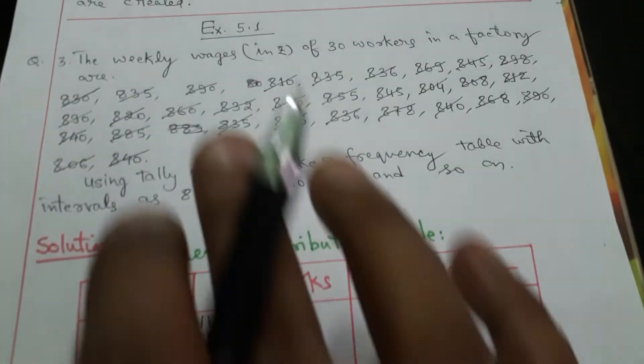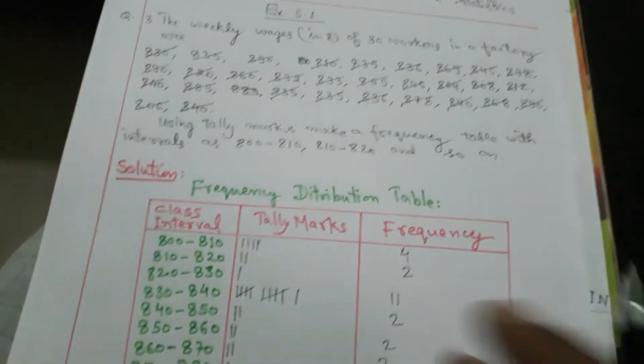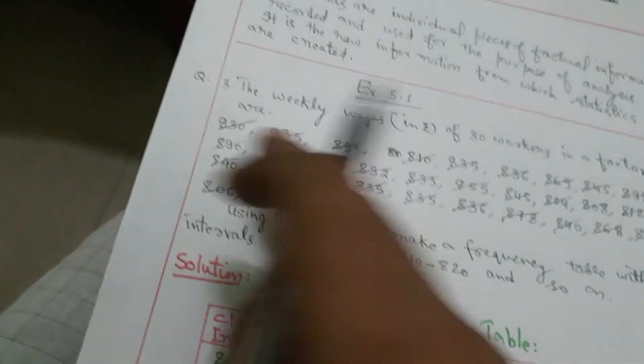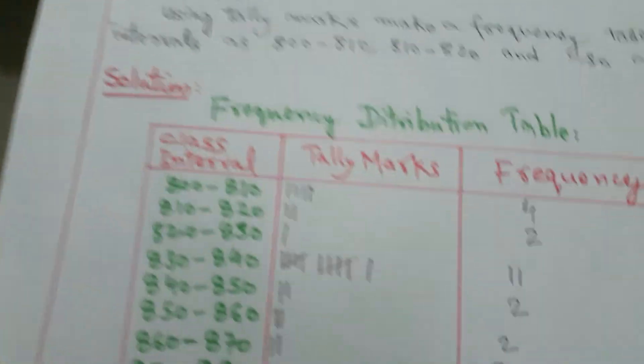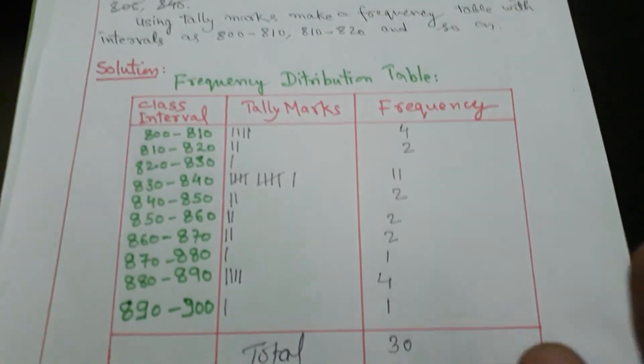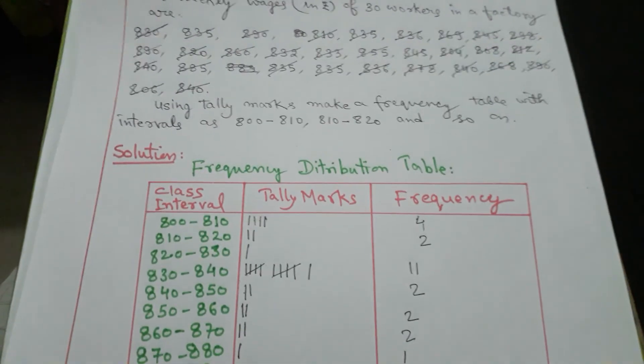You just take mark here and then go on entry, and you get this, the final frequency distribution table of this data of weekly wages of 30 workers in a factory. So this is the frequency. In the exam, you don't have to write this, but only you have to do this one. But while entering the data, you just tick mark one by one, make the tally and total it. This is the frequency distribution table for question number 3 of exercise 5.1 completed. Thank you.